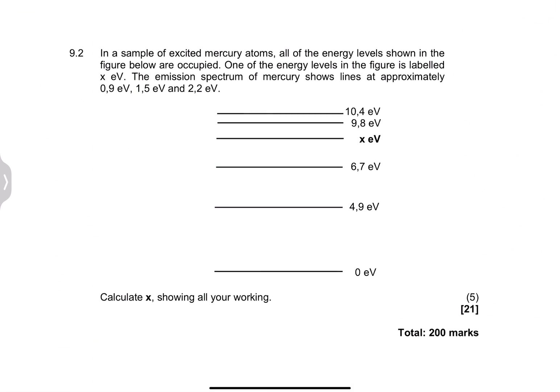The last question says in a sample of excited Mercury atoms, all the energy levels shown in the figure below are occupied. One of the energy levels in the figure is labeled X. You can see it there. They say the emission spectrum of Mercury shows lines at approximately 0.9 electron volts, 1.5 electron volts, and 2.2 electron volts. Now they say to us calculate X showing all your working out.